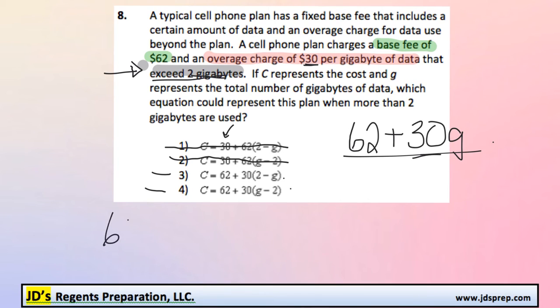So to find out how much they're going to get charged, they get the charge of the base rate of 62 plus $30 per gigabyte that was over 2. So because they used 5 total, that means they used an extra 3. So we would multiply this by 3. And we found that number by taking the amount of gigs they used and subtracting 2 from it.